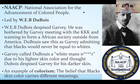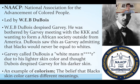There's another important figure who was diametrically opposed to what Garvey was about — W.E.B. Du Bois, associated with the NAACP. He really despised Garvey, bothered by Garvey meeting with the KKK and wanting to form an African society outside of America. Du Bois saw this as Garvey admitting that Blacks would never be equal to whites. Garvey called Du Bois a white man due to his lighter skin color, which plays on the colorism aspects that exist in the Black community. There was a lot of infighting, even though both people wanted to achieve more support, growth, and power for their people — they just went about it in different ways.